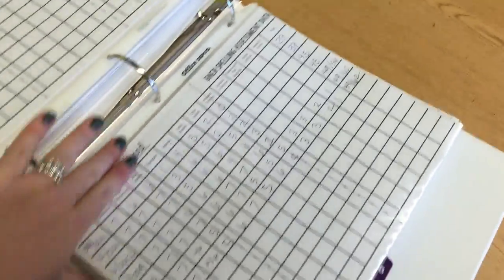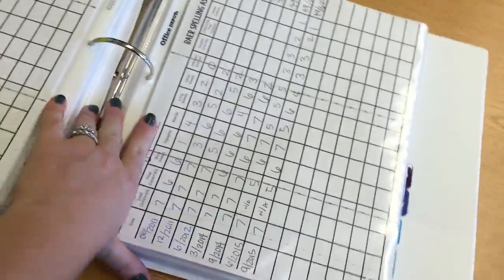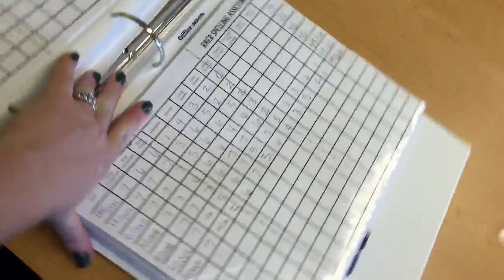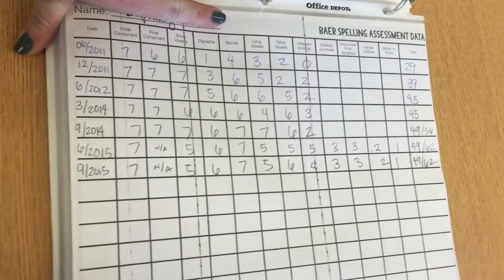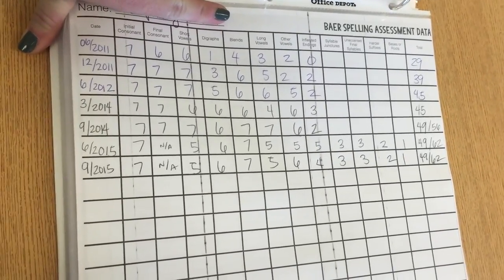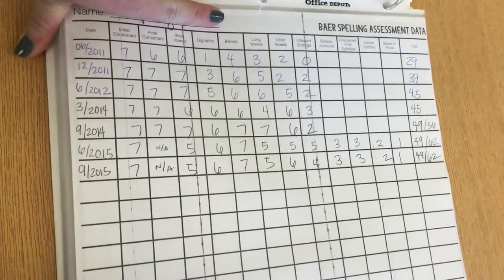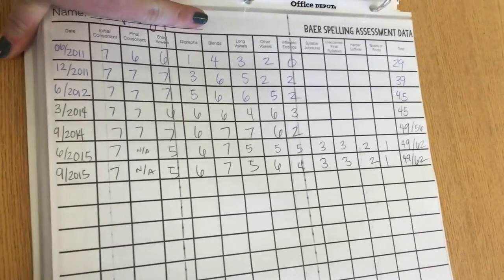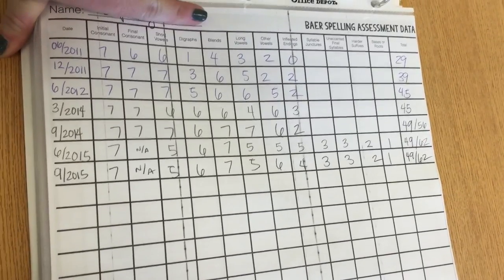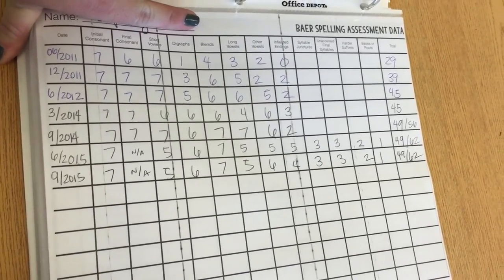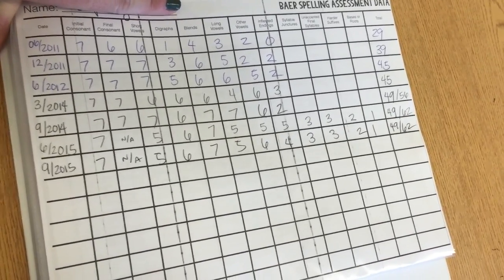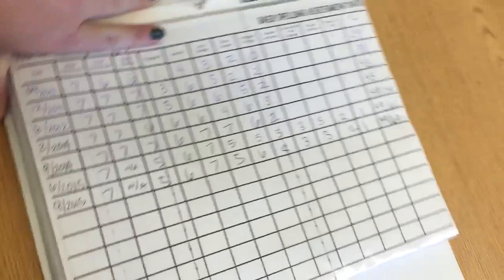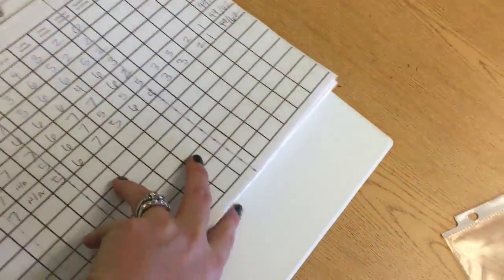If you use Fountas and Pinnell, I really love this format that I figured out to keep track of the different scores they get — the date, each score they got in each section, and then the total score. So it's a nice quick glance to see their progress and to see how they've advanced each time. There's one section for each student.